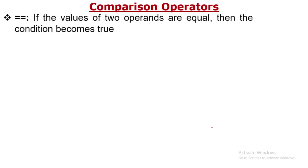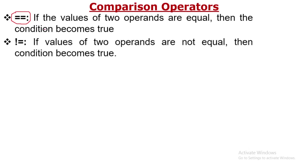Comparison operators — there are six types. First, the double-equal-to (==): if the two operands are equal, the condition becomes true; this operator returns either true or false. The equal-to operator returns true if both sides are equal, otherwise false. The second operator is not-equal-to (!=): if both side values are not the same, it returns true, otherwise false. If both values are equal, it returns false.